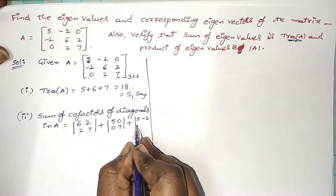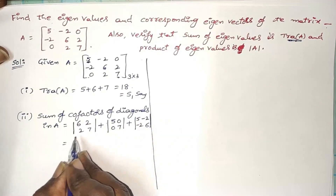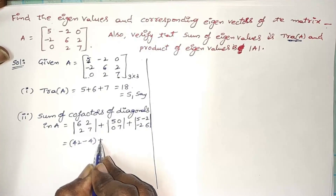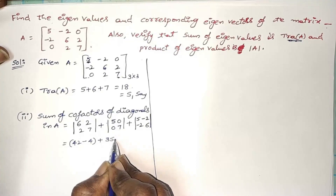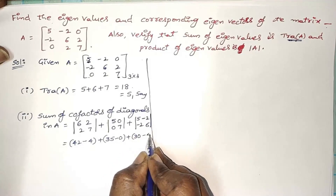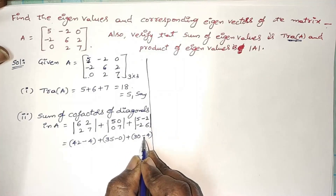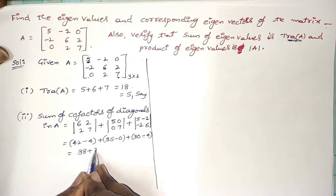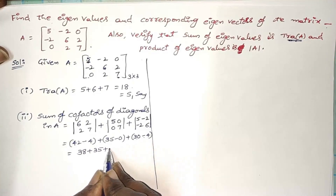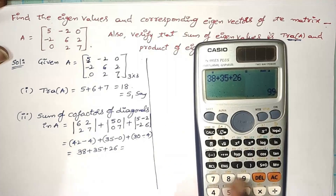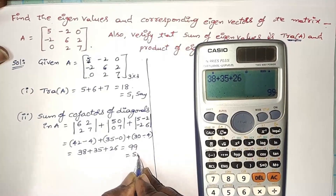Computing the cofactors: det[6,2;2,7] = 42 − 4 = 38; det[5,0;0,7] = 35 − 0 = 35; det[5,−2;−2,6] = 30 − 4 = 26. So S2 = 38 + 35 + 26 = 99.